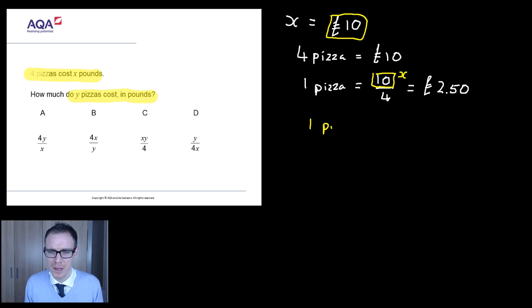Then we can see that in fact one pizza isn't going to cost two pound fifty. It's going to cost x divided by four. It's going to cost the total amount of cost for the four pizzas divided by the four pizzas. So one pizza is going to cost x divided by four.